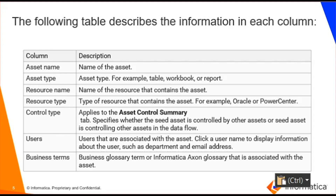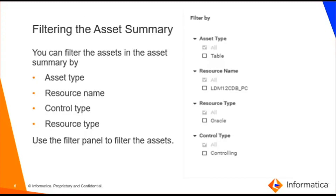Users that are associated with the asset can be seen under the user column, and lastly the business glossary term or Informatica Axon glossary term that are associated with the asset can be seen under the business terms column. Next, we will look at how we can apply filters in the asset summary view.